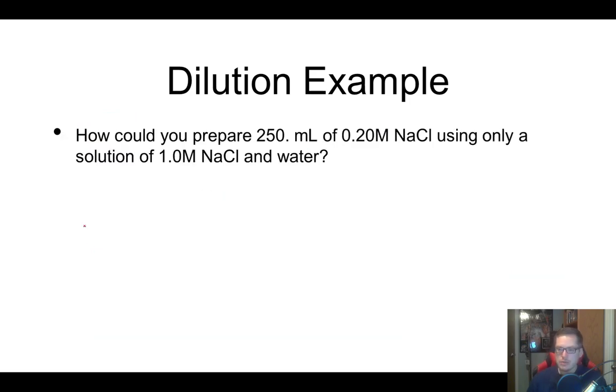It says, how could you prepare 250 milliliters of 0.2 molar sodium chloride using only a solution of one molar sodium chloride? Well, so this is what we're trying to make. So this would be our V2, and this would be our M2. And this is the concentration we're starting with. Notice that when you're trying to make a solution, you're always solving for V1.